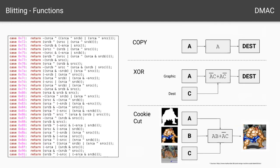If you want to do transparency, on the Amiga you would use the cookie cut function. On the A channel you'd have a bit mask with 1s everywhere you want to be opaque and 0s everywhere you want to be transparent. On the B channel you'd have your graphic, and on the C channel you'd have your destination. When those are combined using the min-term A AND B OR NOT A AND C, you would end up with the Sumo Wrestler over the background.